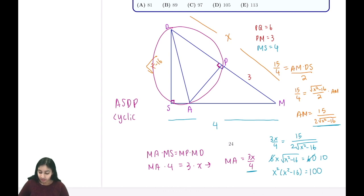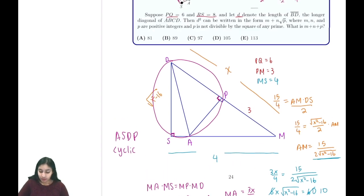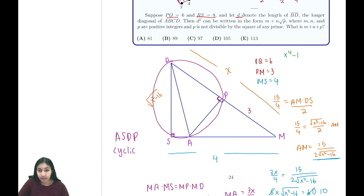This gives us x to the fourth minus 16x squared minus 100 equals 0. Using the quadratic formula to solve for x squared, we get 16 plus or minus the square root of 256 plus 400, all over 2. The solutions are 16 plus or minus 4 square root 41 over 2, which simplifies to 8 plus 2 root 41.